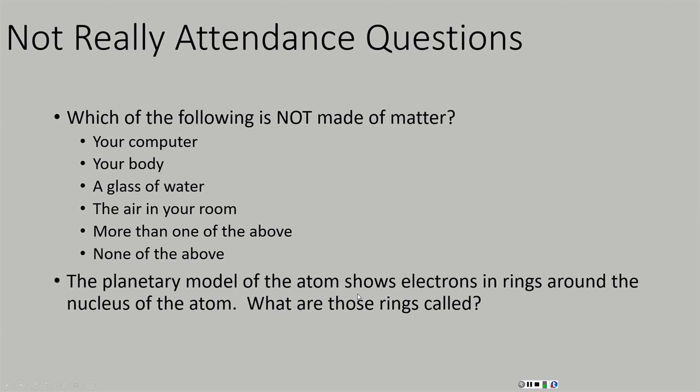The planetary model of the atom shows electrons in rings around the nucleus. What are those rings called? We called them orbitals or shells. And today we're going to be looking at those later on in this lecture.